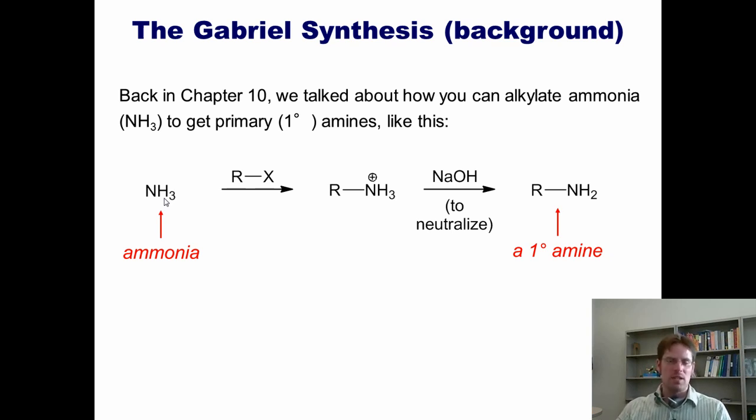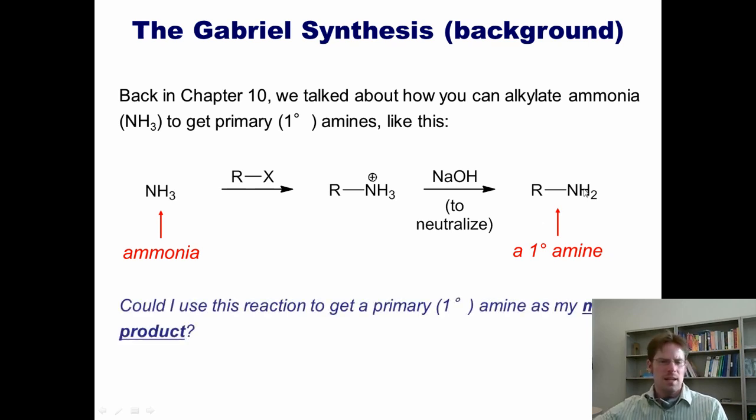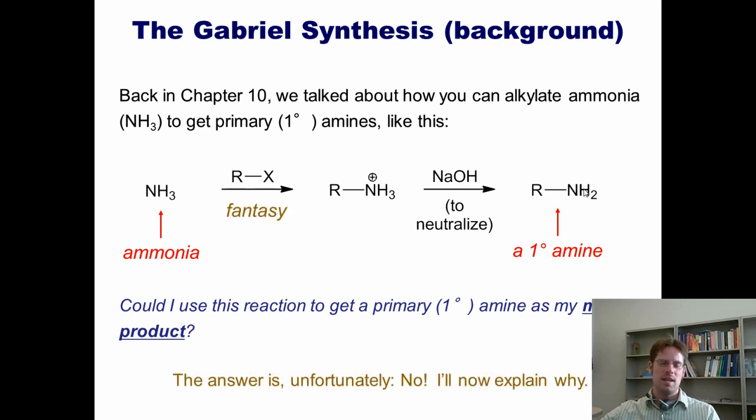Back in Chapter 10, we talked about how you can alkylate ammonia, NH3, to get primary 1° amines. I could take ammonia and have the lone pairs on the nitrogen attack the alkyl group, kick off an alkyl halide, and generate an ammonium salt. When I neutralize that salt, I then get a primary amine. Question is, do you think I could use this reaction to get a primary amine as my major product? The answer is, unfortunately, no. This would be a fantasy.